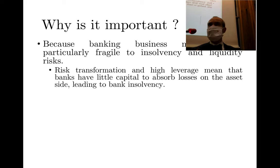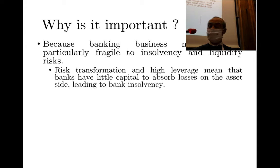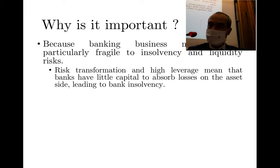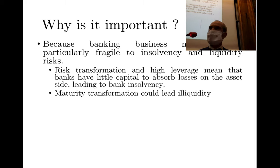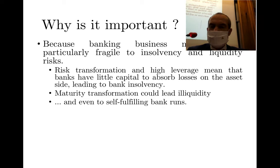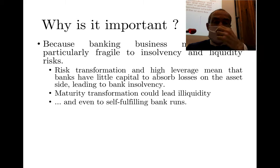If a bank is clever, it gets money at low cost and finds high-return investments, ending up with very low capital relative to assets — very high leverage. Risk is related to insolvency, while maturity transformation creates liquidity risk: you owe money to depositors who can withdraw on demand, while lending in illiquid long-term investments.